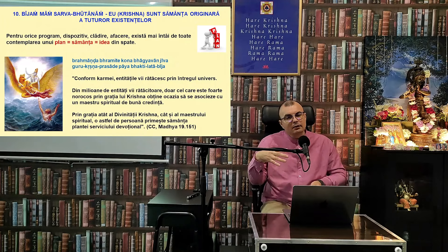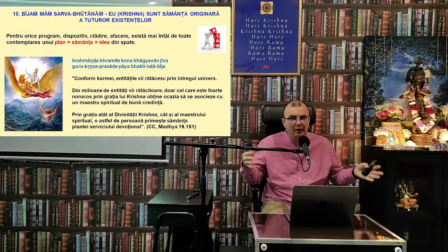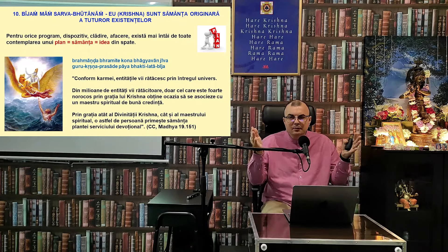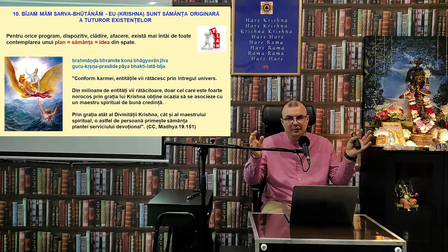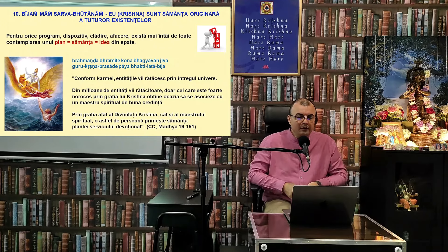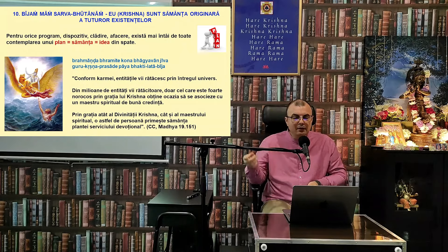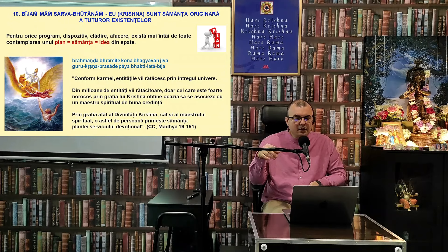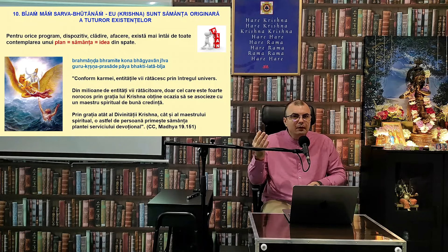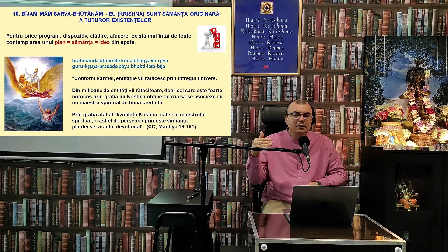Astăzi suntem în corp de ființă umană, mâine suntem broscuță, poi mâine pasăre — ne realizăm toate dorințele noastre. Natura materială îți furnizează orice dorință. Din milioane de entități vii rătăcitoare, doar cel care este foarte norocos, prin grația lui Krishna, obține ocazia să se asocieze cu un maestru spiritual de bună credință. Unele dintre aceste entități vii devin, într-un mod mistic, baghya — obțin un anumit noroc — care devine cauza întâlnirii unui maestru spiritual.